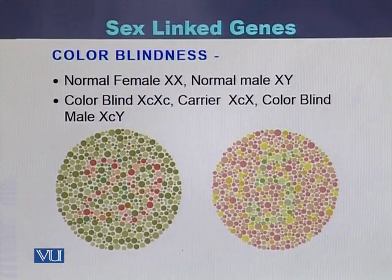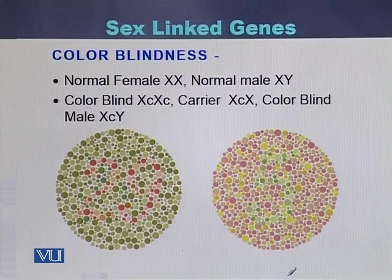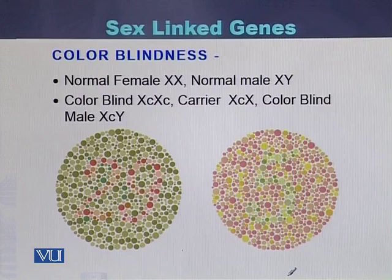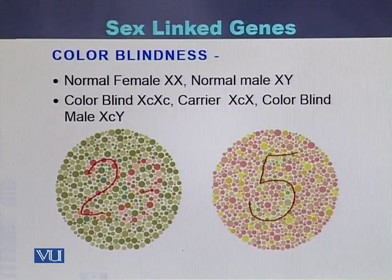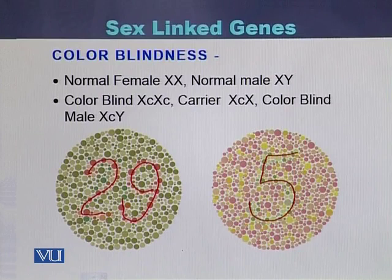Color blindness is a disease linked to the X chromosome. Individuals with color blindness cannot distinguish between green and red colors. When shown test figures, they cannot identify the numbers written on the diagrams — for example, they cannot see that '5' or '29' is written on the color blindness test images.